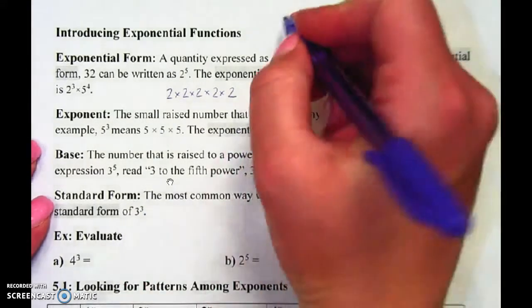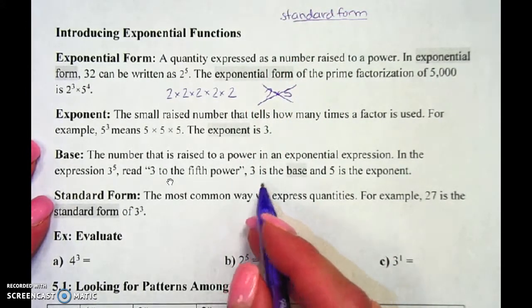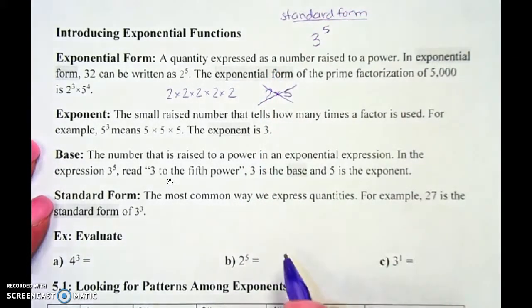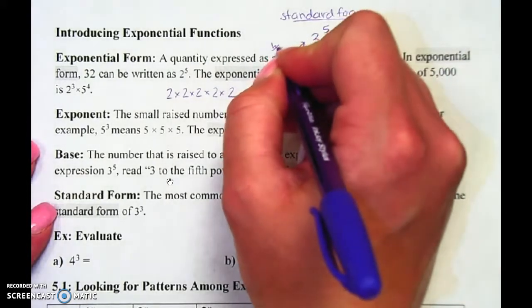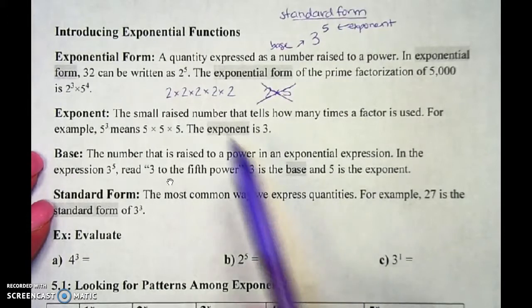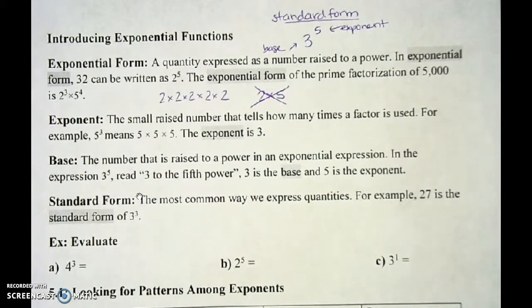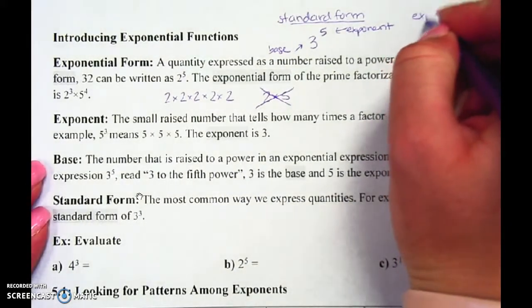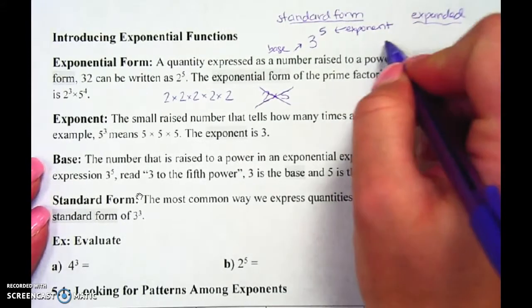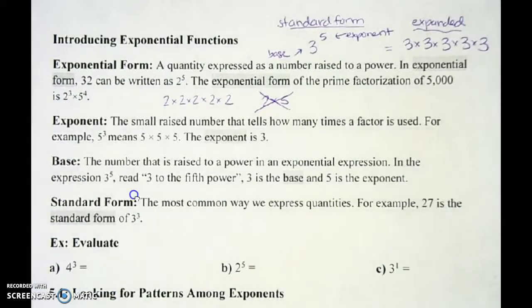Standard form is the way we most commonly write it. So 3 to the 5th power would be my standard form — 3 was my base and 5 was my exponent. You'll also see in a lot of my answer keys what's called expanded form. If I expand this, that would be 3 times 3 times 3 times 3 times 3. So my standard form is my base with my exponent, and my expanded form is when I write it out with that base however many times — in this example, I had 3 five different times.